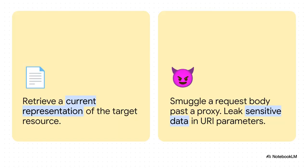Let's start with a big one: GET. Its job is simple — get data. But as a pen tester, we see a couple of immediate problems. First, any sensitive data you stick in the URL, like a session token, gets logged everywhere — proxies, browser history, server logs. It's a mess. Second, and this is a classic, the RFC says a GET request should not have a request body. It doesn't say must not. That's a loophole. It's an open invitation to try and smuggle a malicious request body past a front-end server, hoping the back-end server is lazy and processes it anyway. That's textbook request smuggling.